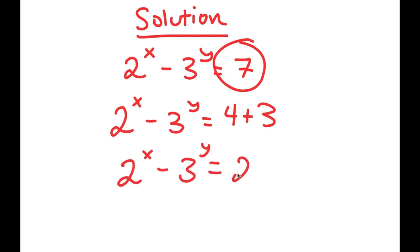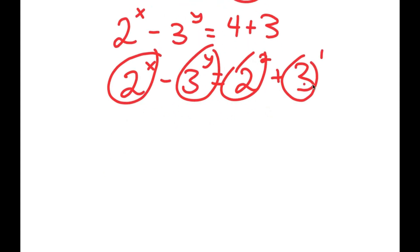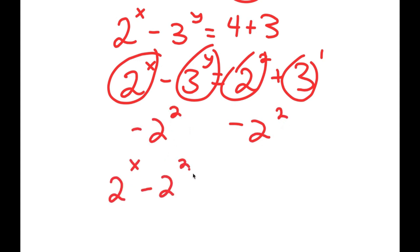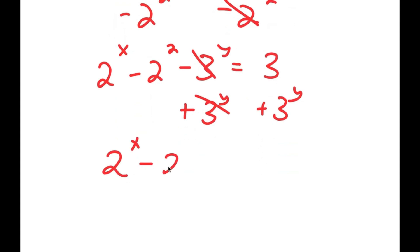Since 4 is the same as 2 squared, I get 2 squared plus 3. Notice I have something in the form 2 to the power of x minus 3 to the power of y equals 2 to the power of a number plus 3 to the power of 1. I'll group the powers of 2 together and the powers of 3 together by subtracting 2 squared on both sides, giving 2 to the power of x minus 2 squared minus 3 to the power of y equals 3. Then adding 3 to the power of y on both sides gives 2 to the power of x minus 2 squared equals 3 to the power of y plus 3.